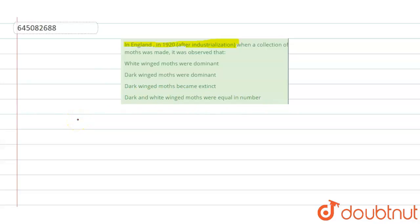So if you see this one, we are asked a case after industrialization. After industrialization, what happened was sulfur dioxide in the atmosphere increased. As a result of which pollution increased, and so lichens on the bark of trees...